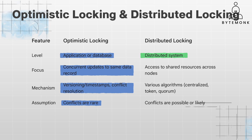Distributed locking coordinates access to shared resources — for example, files, databases, configuration data — across different machines or processes. It employs various algorithms: centralized, token-based, quorum-based, etc., to ensure that only one node or process can hold a lock on a resource at a time. It also assumes that conflicts are possible or likely due to the distributed nature of the system and prioritizes preventing conflicts over performance optimization. For example, multiple servers accessing and updating the same inventory count in a distributed e-commerce system.